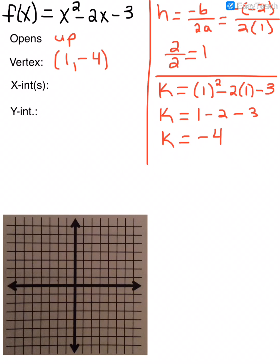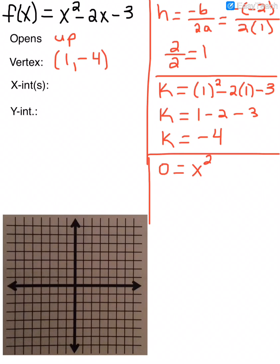To find my x-intercepts, I can plug in 0 for y and solve for x. My y is f of x, so I'm going to plug in 0 there. Since this is a quadratic, I have to use one of the methods for solving quadratic equations. The easiest method is to factor. The factors of 3 that would add or subtract to give me 2 are 3 and 1 — those are the only factors of 3.